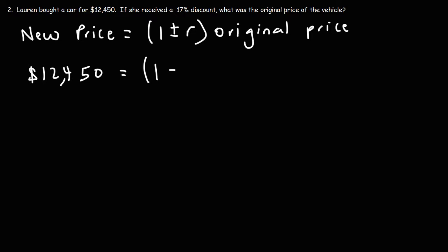So since we're dealing with a discount, we're going to use a negative sign. Now, 17% as a decimal. If we divide 17 by 100, that's going to be 0.17. And the original price is what we're looking for. So we're going to call this X.